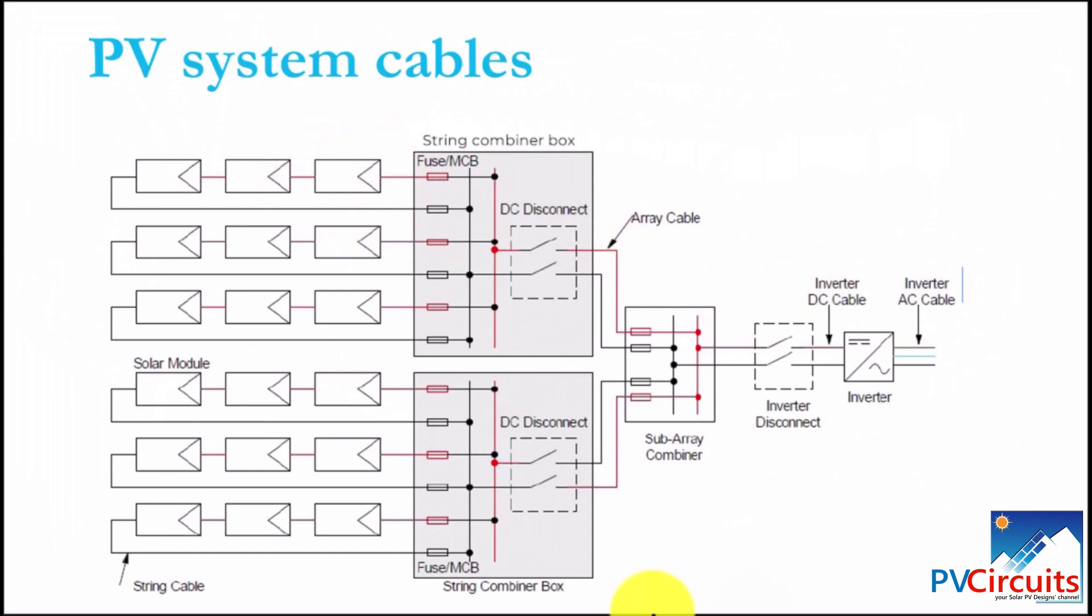Then we have the PV string cables. This is a cable that runs from the array taking the power to the combiner. Then we have the PV array cables. From the combiner box to the next electrical component, we have the array cable. This is one array governed by this string combiner box. Then we have a second array governed by this string combiner box. And those two arrays are joined to the sub array combiner. Then from the sub array combiner to the inverter, we have the DC inverter cable. They connect the PV array DC connectors to the DC side of the inverter. Then we have the AC cable running from the inverter to the electrical loads, found on the AC side of the inverter.